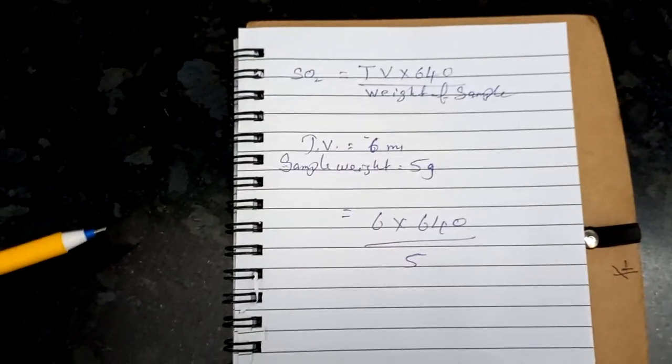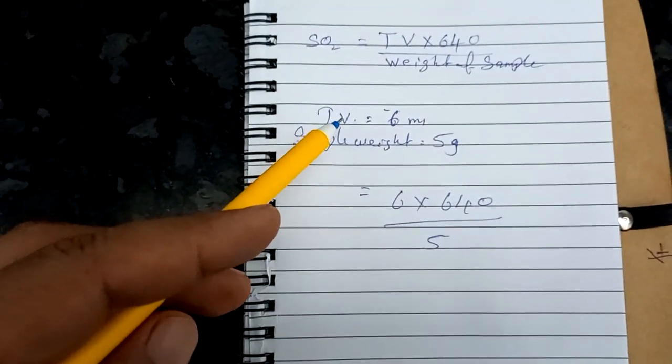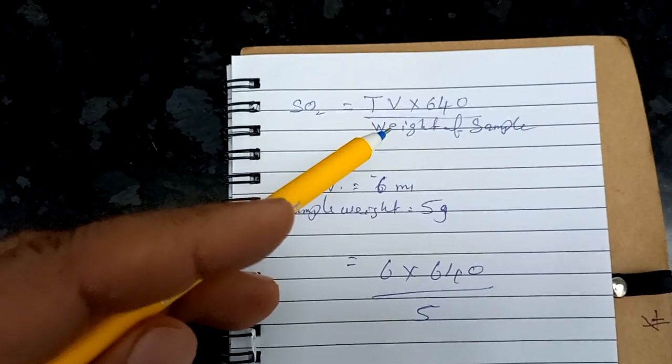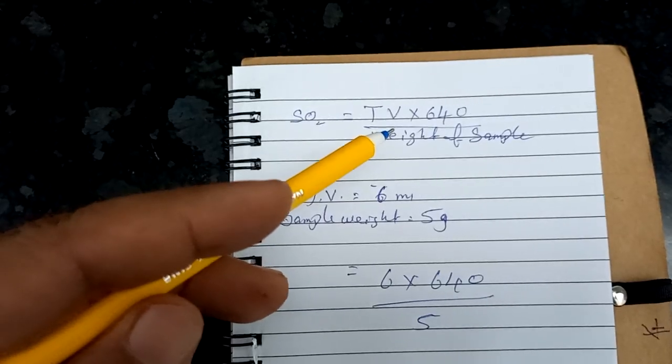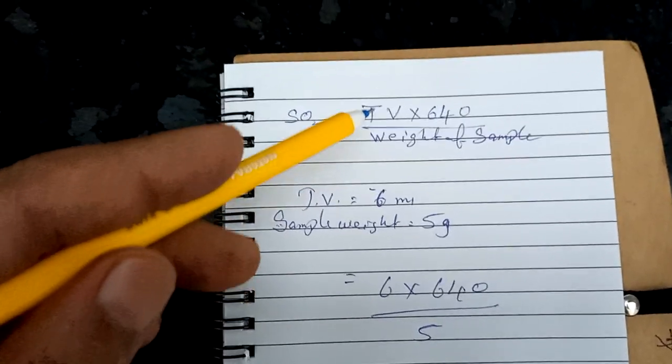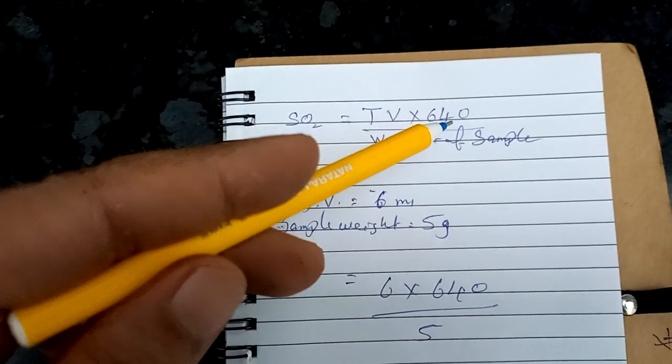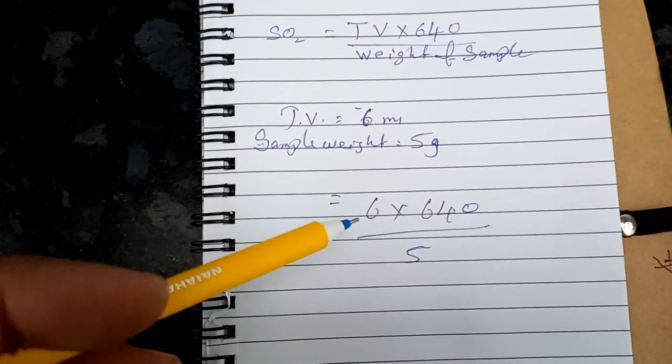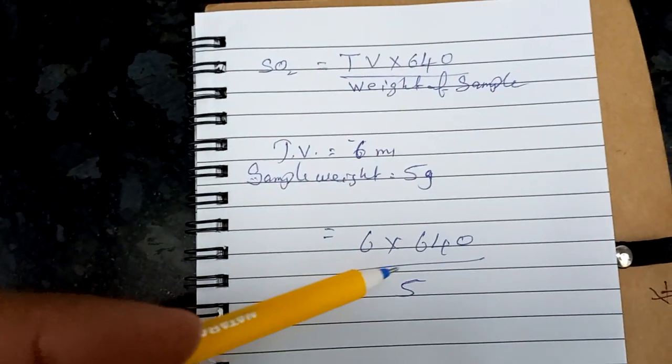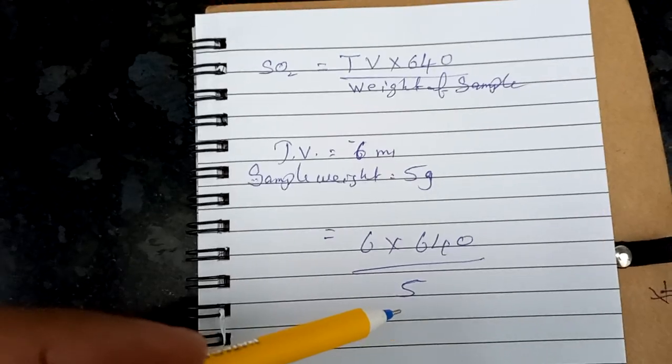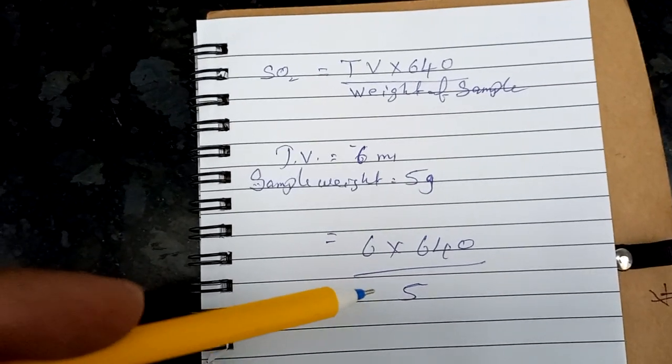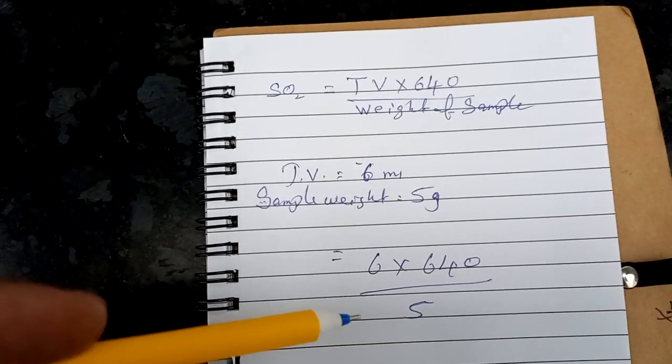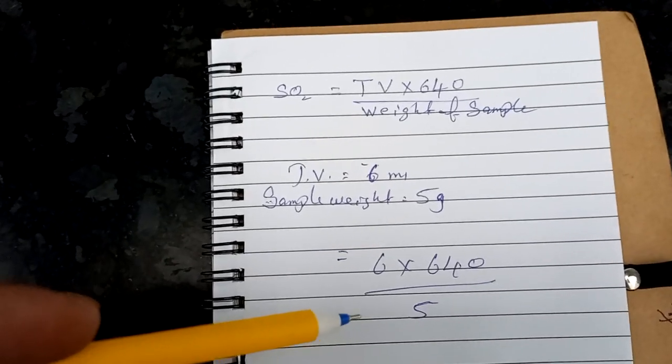After the titration we will get titration value, it is 6 ml. Now we can use this formula and calculate how much sulfur dioxide in the sample solution. The formula is TV × 640 divided by weight of sample. So 6 × 640 divided by weight of the sample. If you calculate you will get this quantity of SO2 content in your juice or food pulp.